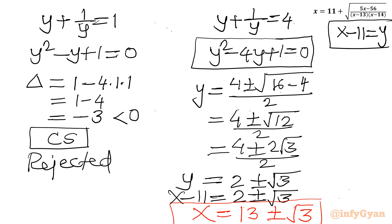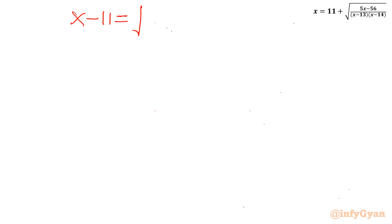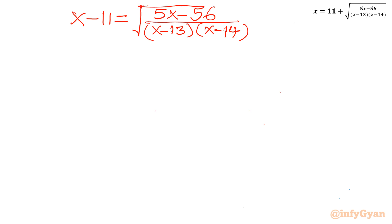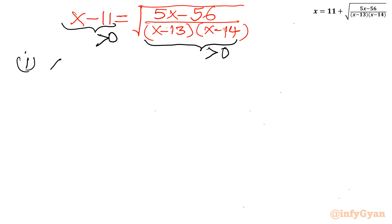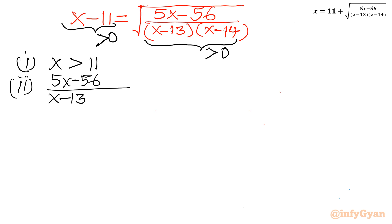This is our final solution — both are real values. Let us cross-examine whether they satisfy our equation using basics of radicals and domain. Writing the equation as x minus 11 equal to square root of (5x minus 56) over (x minus 13)(x minus 14): the left-hand side should be positive, and the radicand should be positive. So first condition: x should be greater than 11. Second condition: (5x minus 56) over (x minus 13)(x minus 14) should be greater than 0.